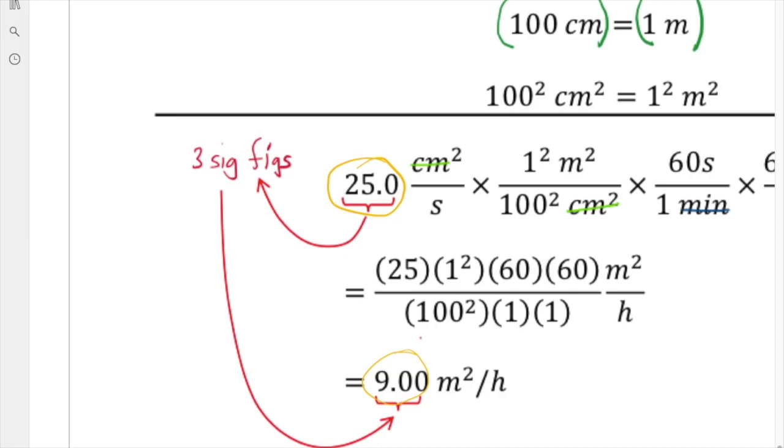None of the conversion factors actually factor in our decision on sig figs. It always has to do with the original value. So since this value here was three sig figs, then we have to add these two zeros at the end to make this three sig figs using the weird rule, of course.